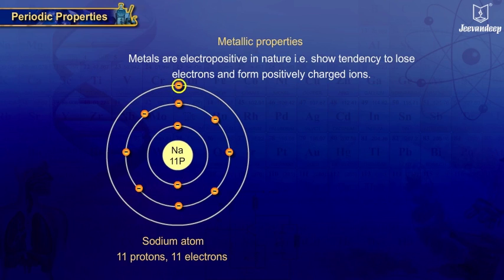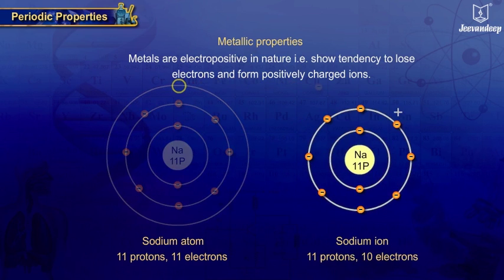Metals form positively charged ions. Sodium atom gives away one electron from its outermost shell easily, forming sodium ion with one unit of positive charge.